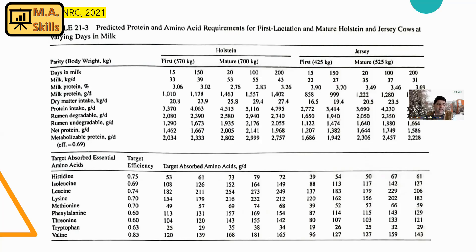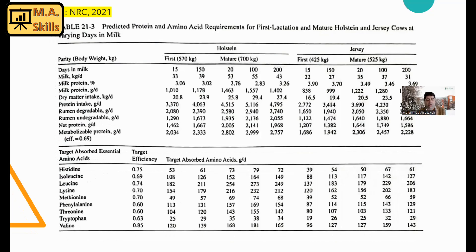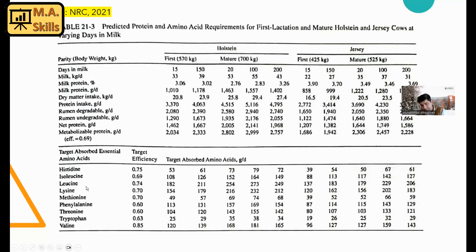In this table, you can see predicted protein and amino acid requirements for first-lactation and mature cows at varying days in milk, including target absorbed essential amino acids. This is more specific information about amino acid requirements. Usually for including amino acid requirements in feed formulation, we need to use feed formulation software, as it's quite tricky to formulate a diet manually and accommodate these amino acid levels.